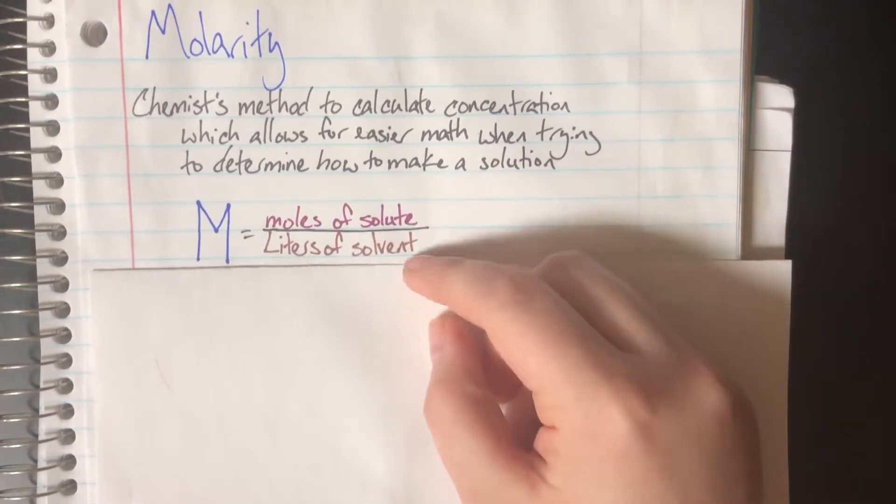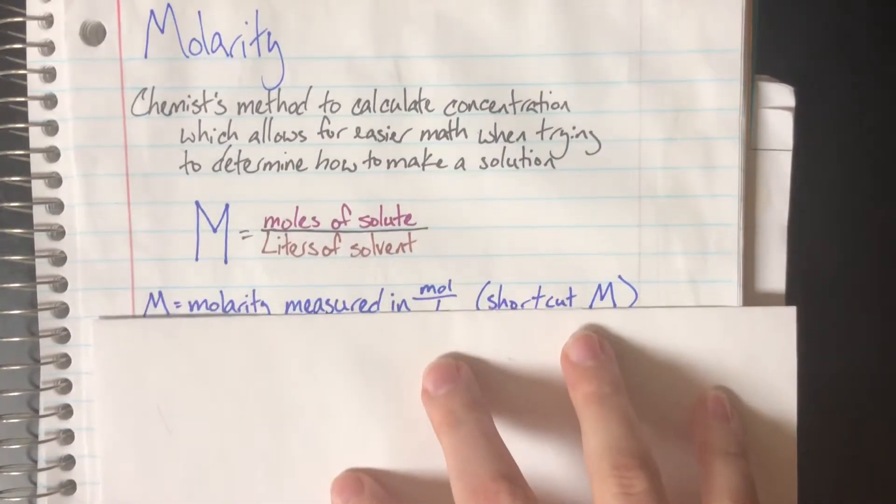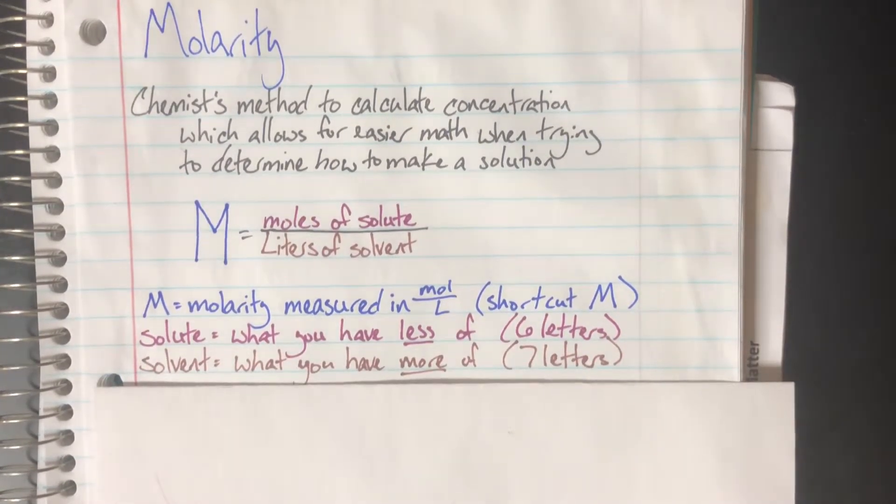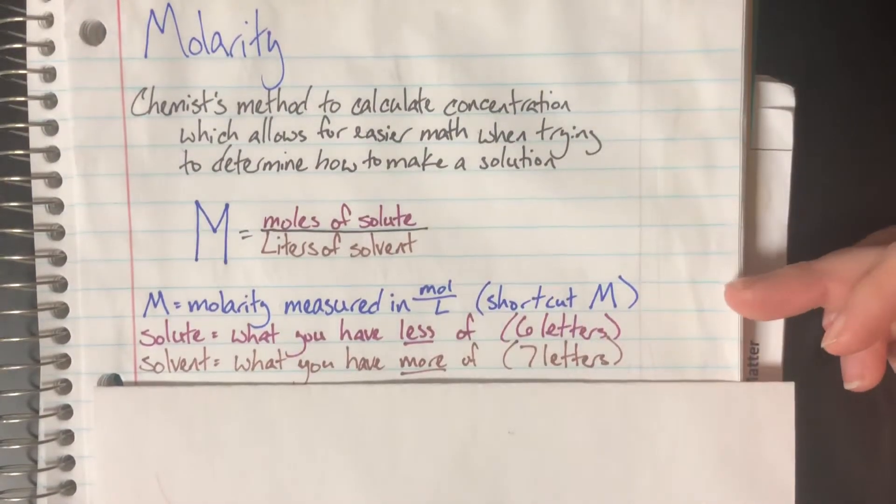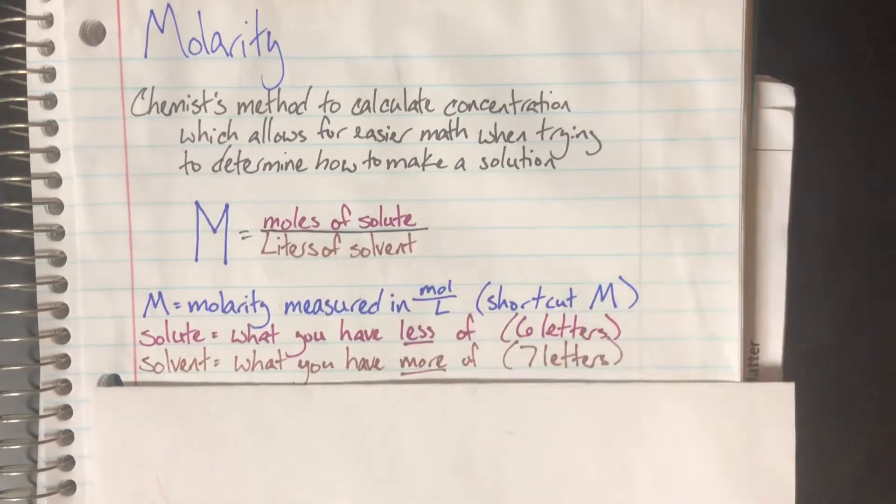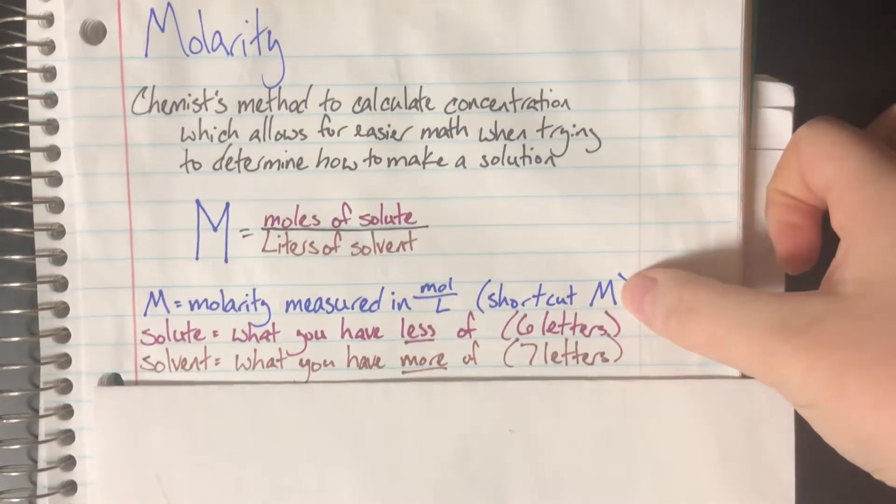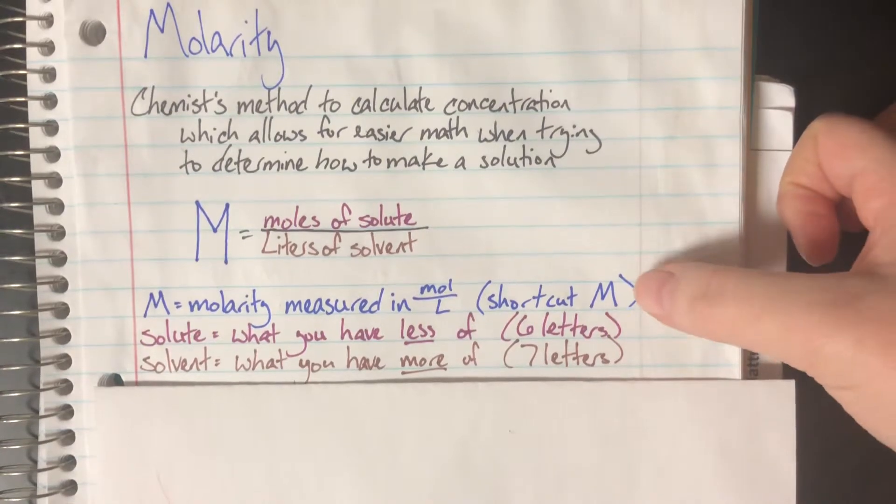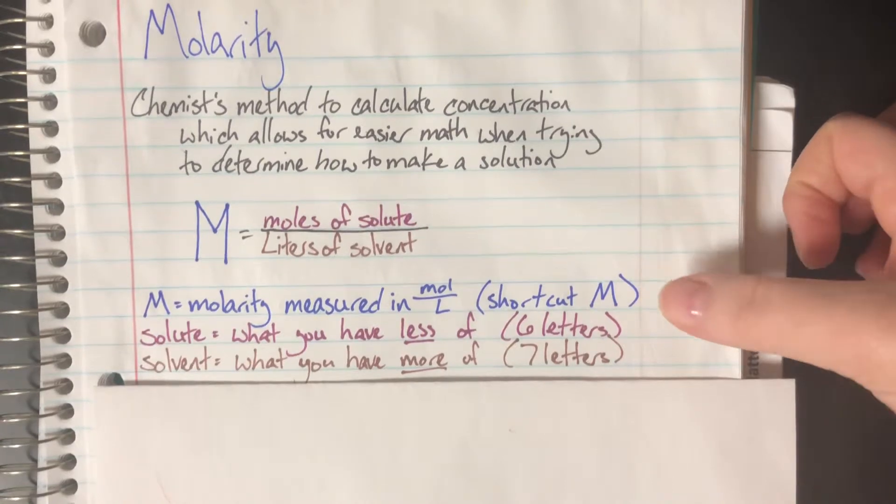The new terms here are solute versus solvent, which have quick and easy definitions. Capital M represents molarity. Even though molarity is measured in moles per liter, we're too lazy to write that out, so we just attach a capital M as the unit. You're expected to know that capital M means moles per liter.